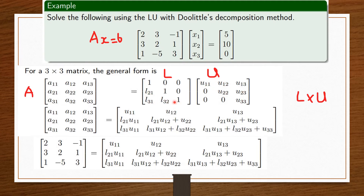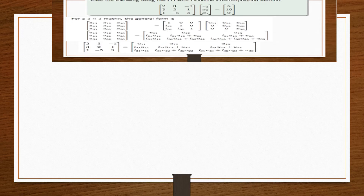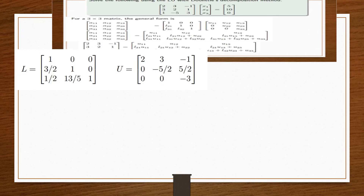This is the approach for finding your lower and upper triangular matrices using Doolittle's method. If done correctly, you should have L equal to 1, 0, 0 / 3/2, 1, 0 / 1/2, 13/5, 1, and U equal to 2, 3, -1 / 0, -5/2, 5/2 / 0, 0, -3. Remember, our goal is not just to find L and U — our goal is to solve for the values of X.